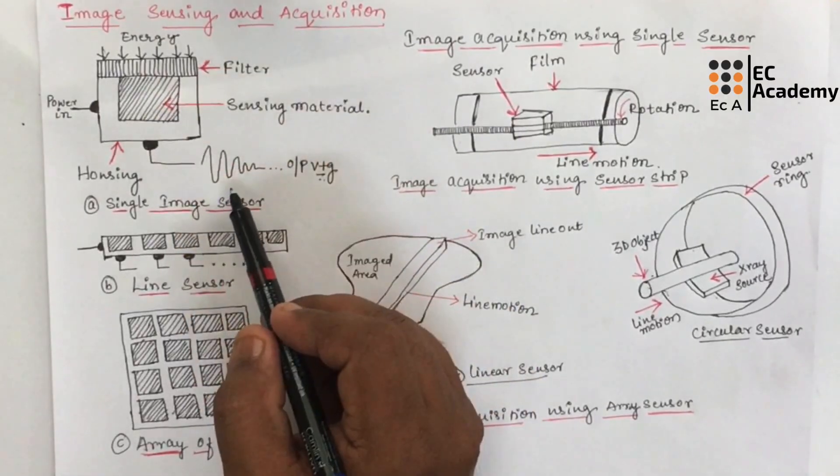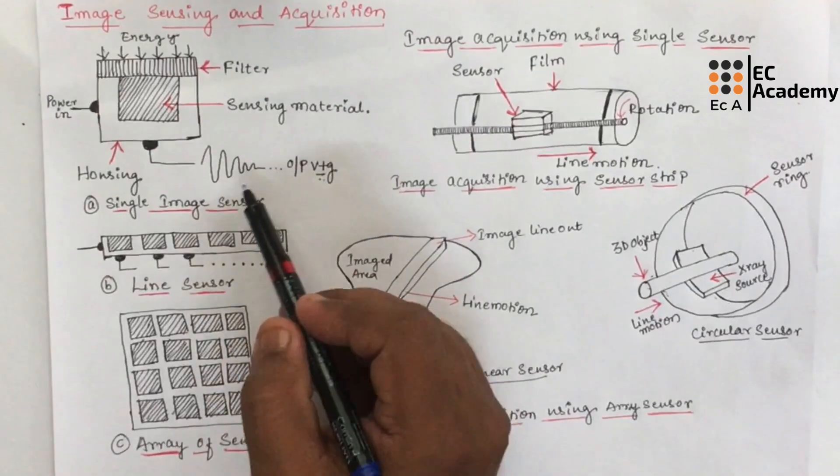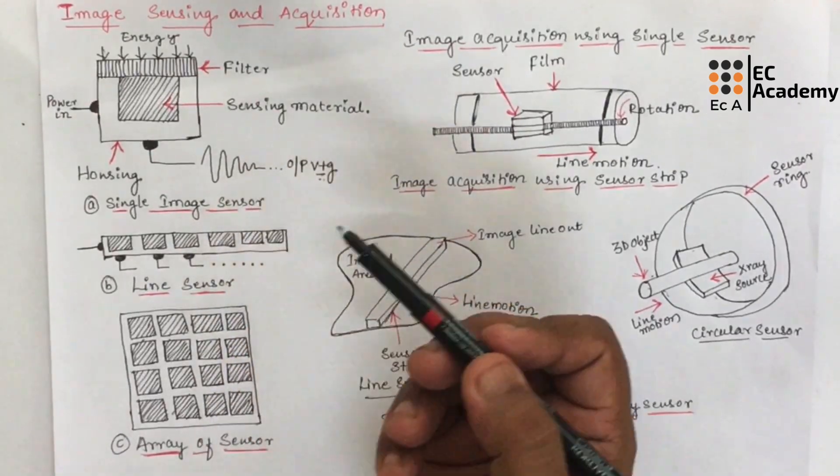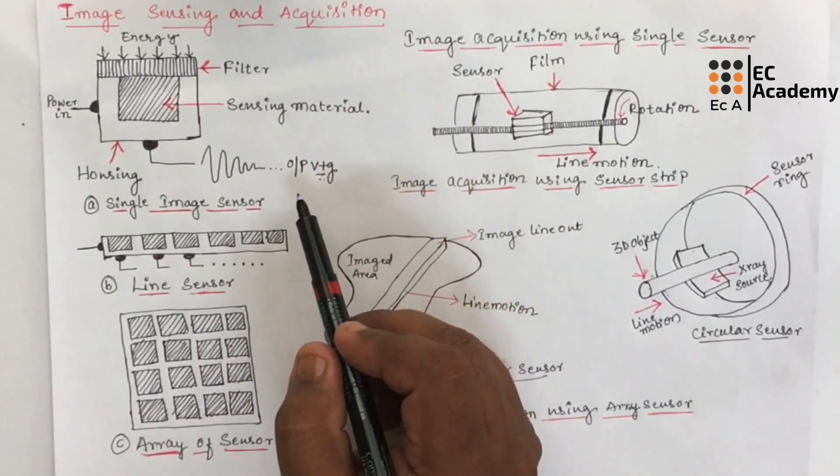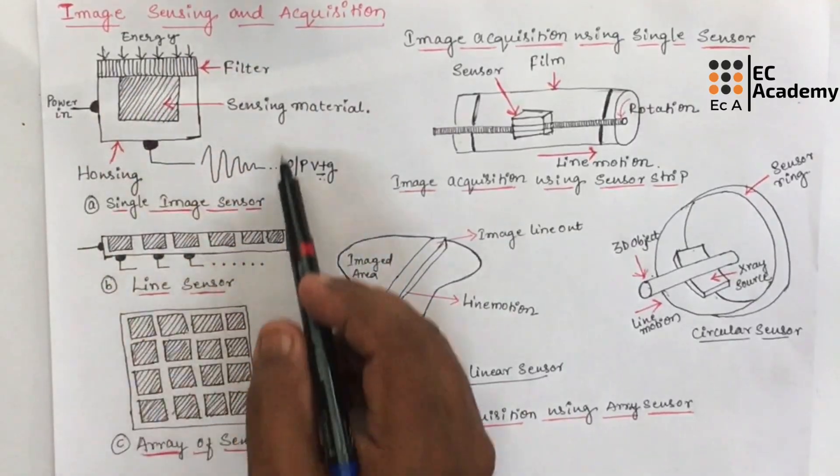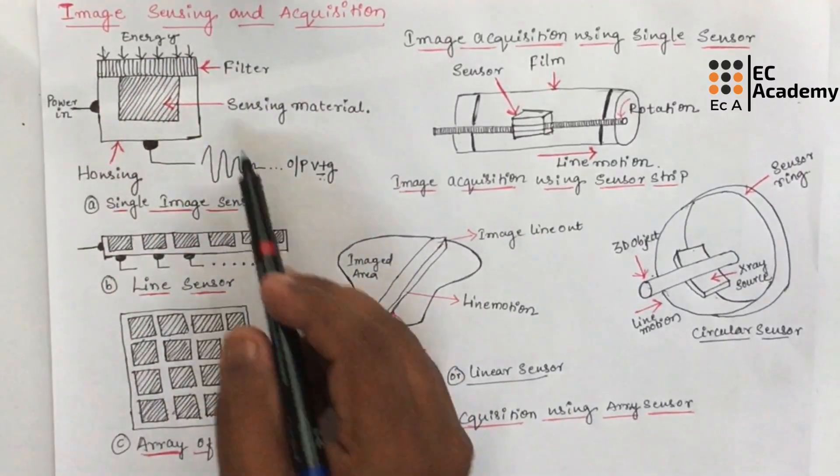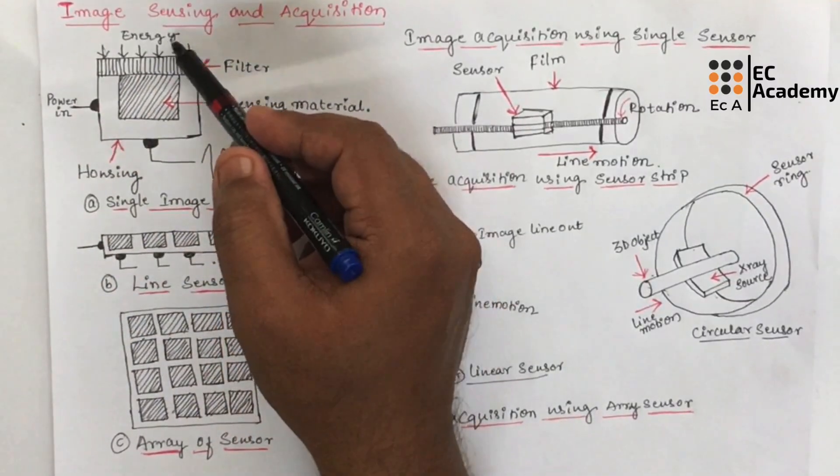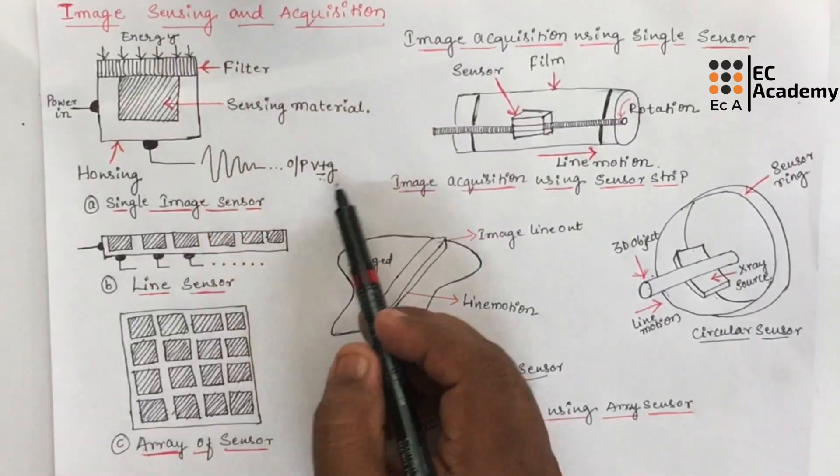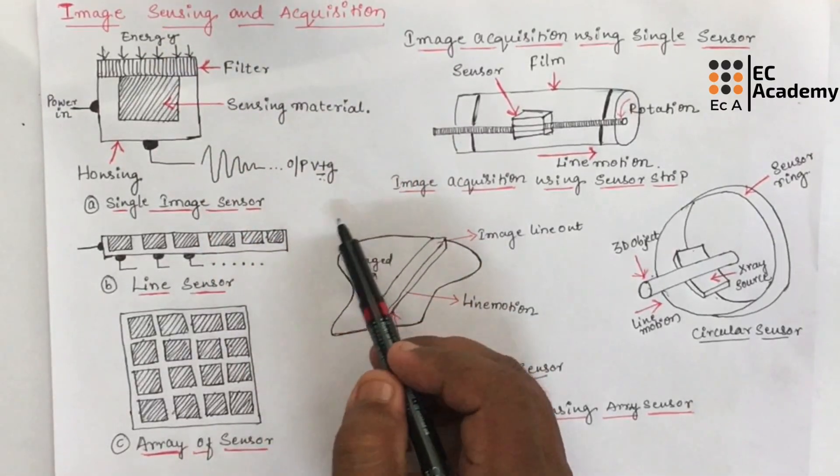So output of a sensor will be in analog form. This analog voltage will be converted into digital form using a digitizer. So this is the principal module of image sensor, which is used to transform the illumination energy into the digital image form.